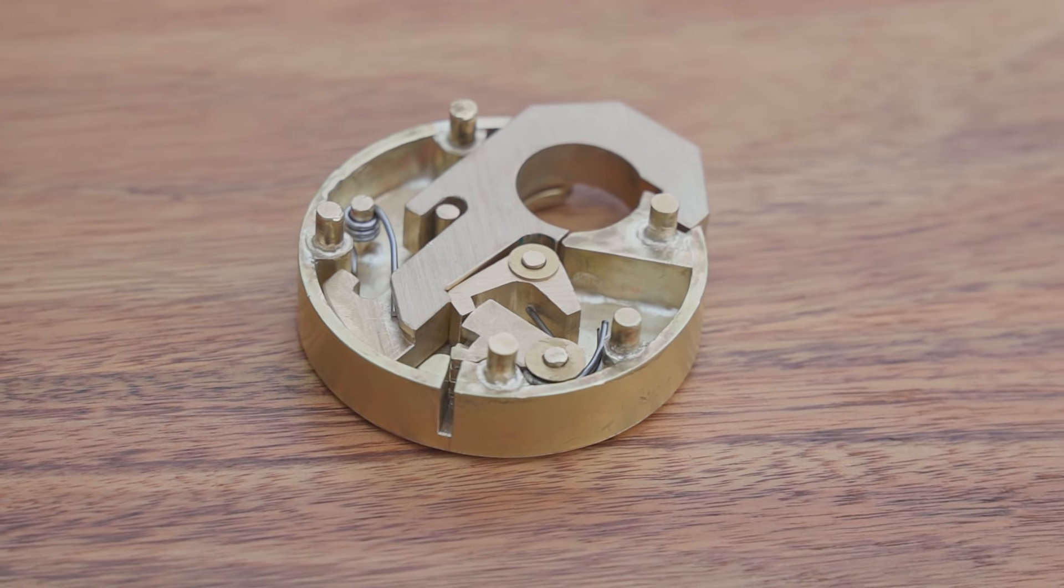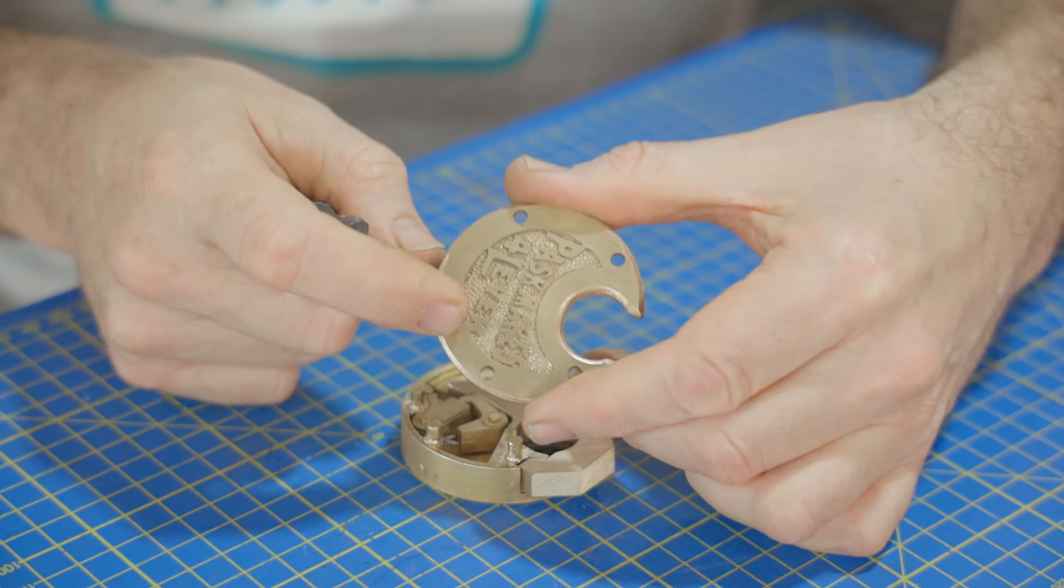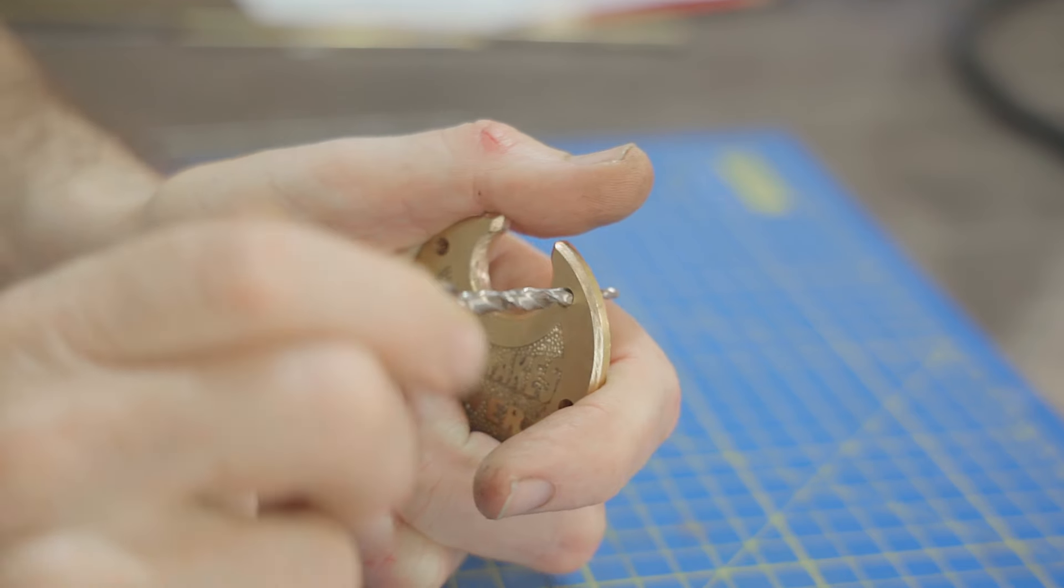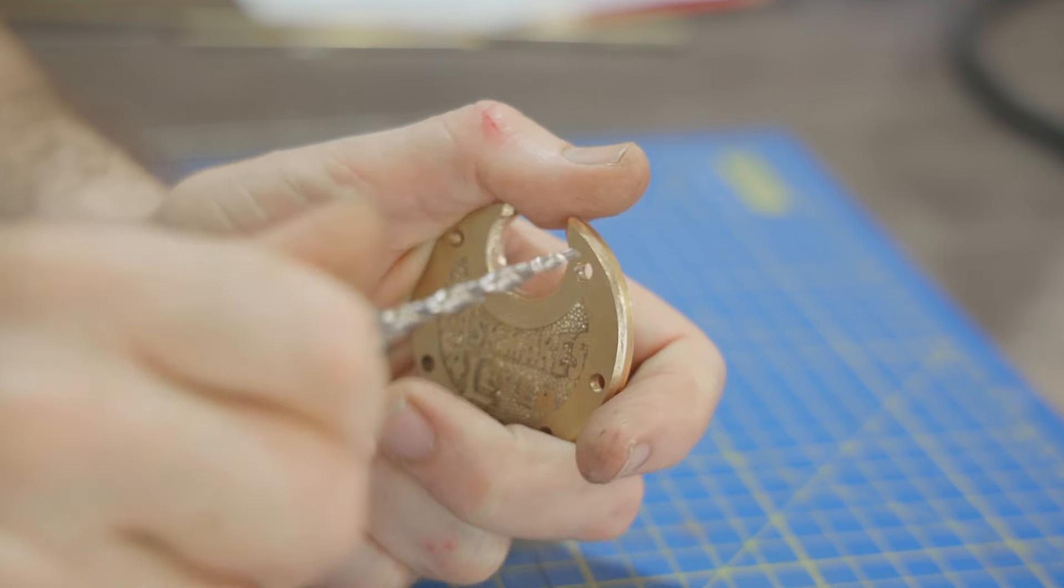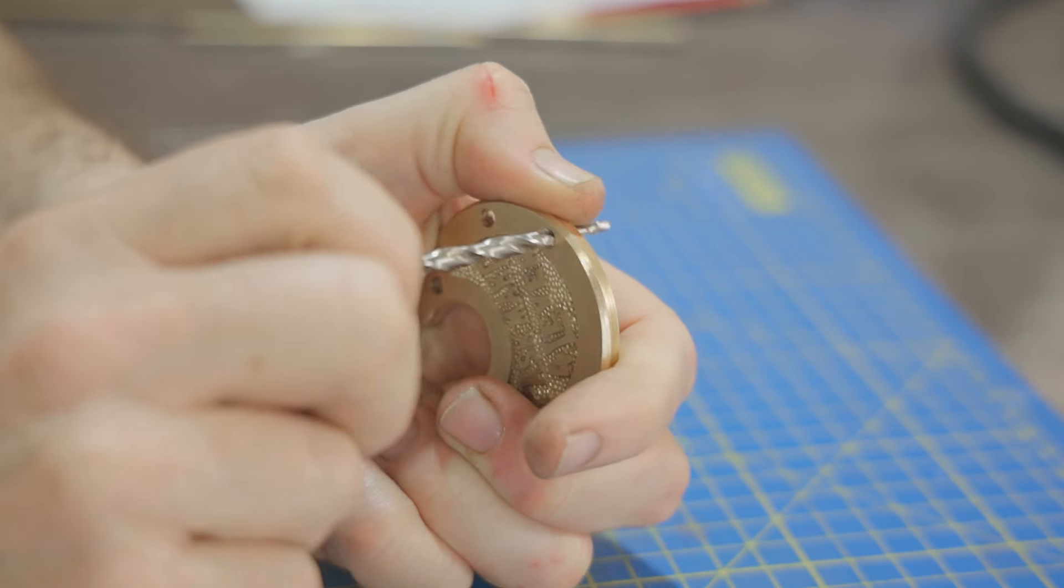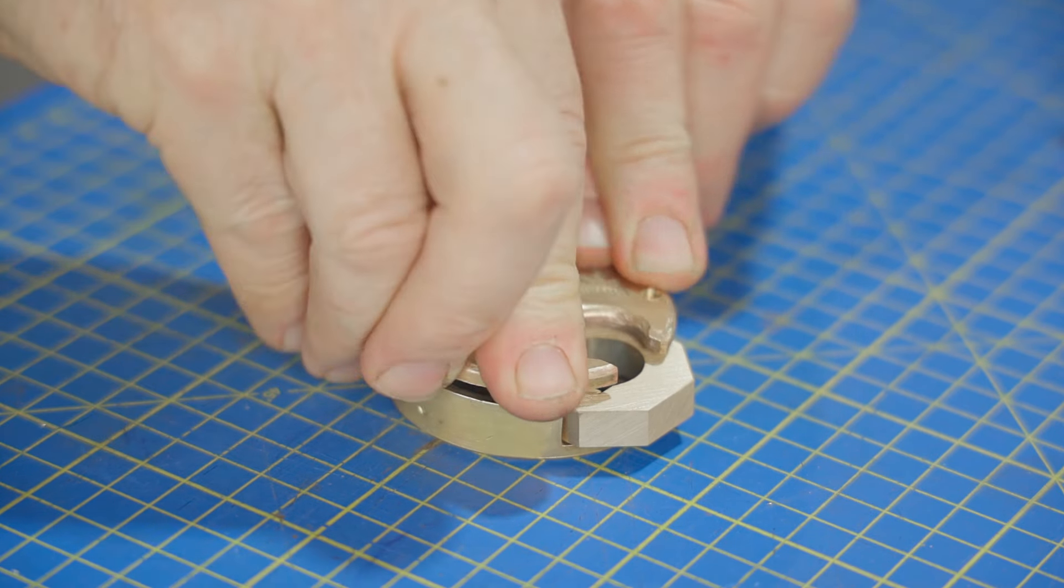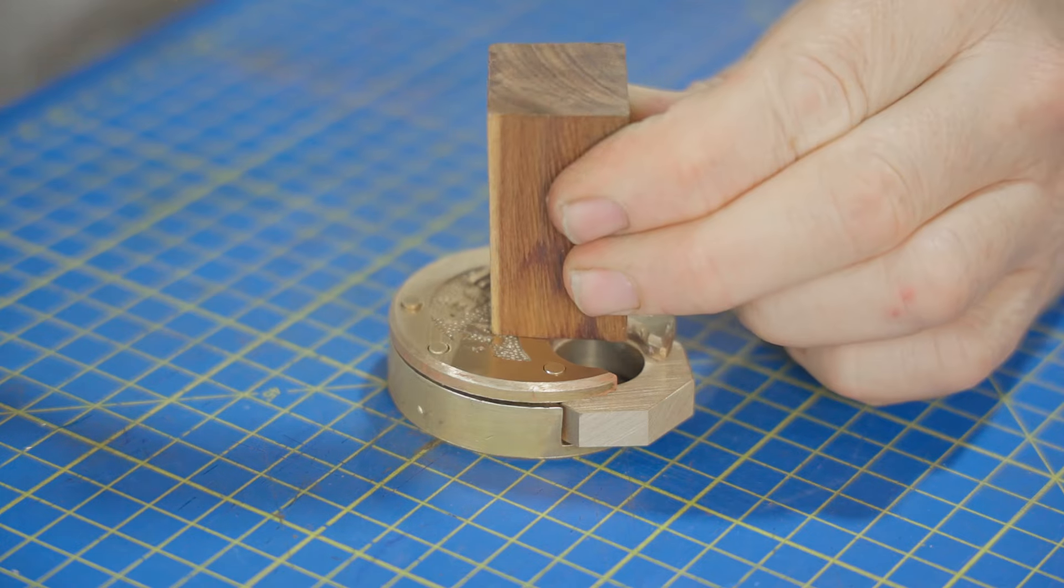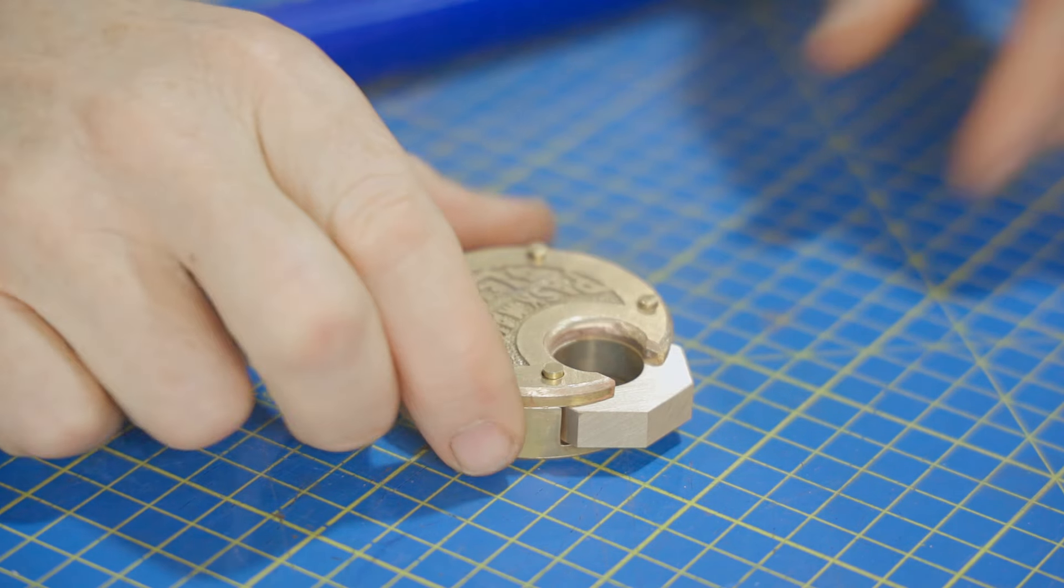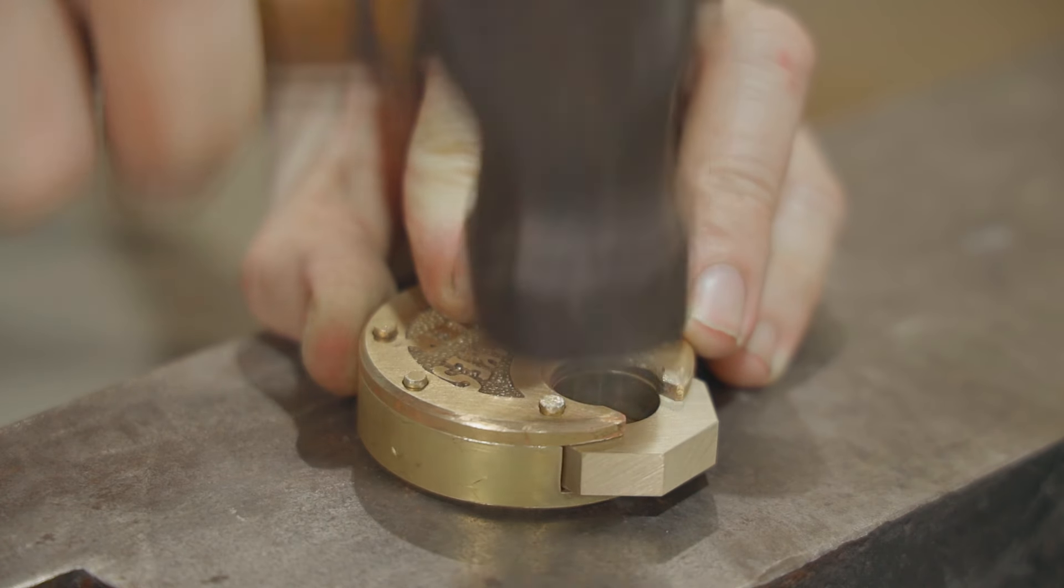To secure the face the pins will get peened over to lock it on, and to make it super secure I'll taper the holes in the front of the face and I'll do that with this tapered countersink bit. I'm just doing it by hand as I don't want it to grab and pull all the way through, and it only needs a small amount of material removed for it to work. That's it, never seeing the inside again unless there's ever any problems and I'll have to get in there somehow.